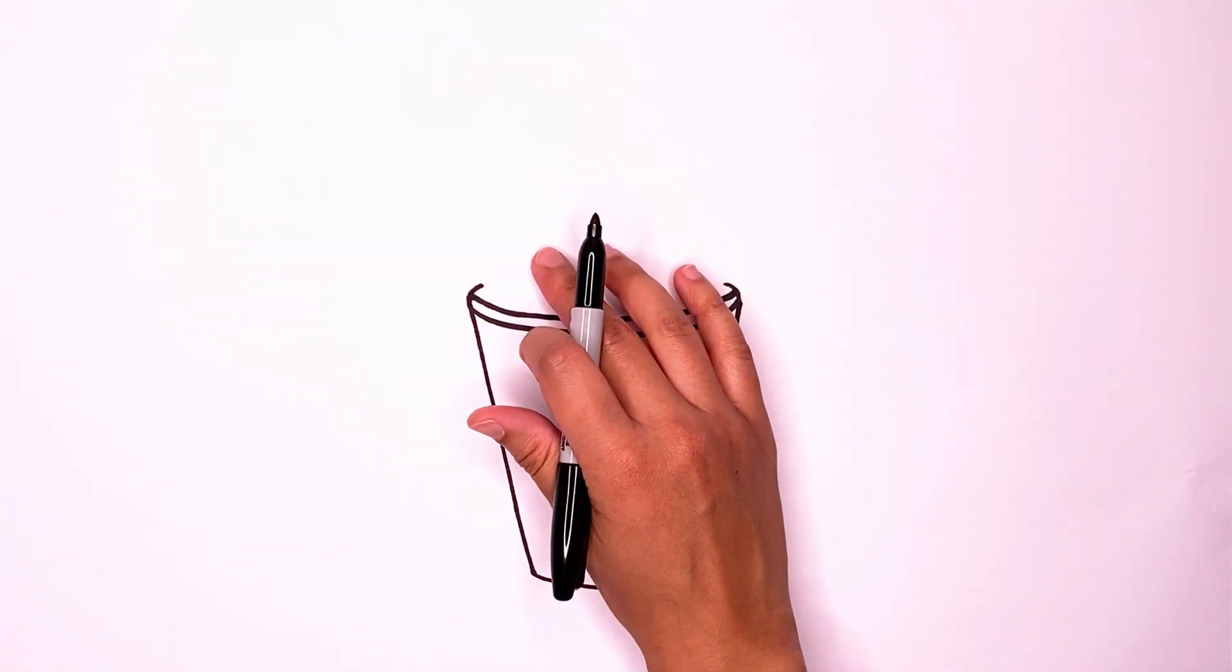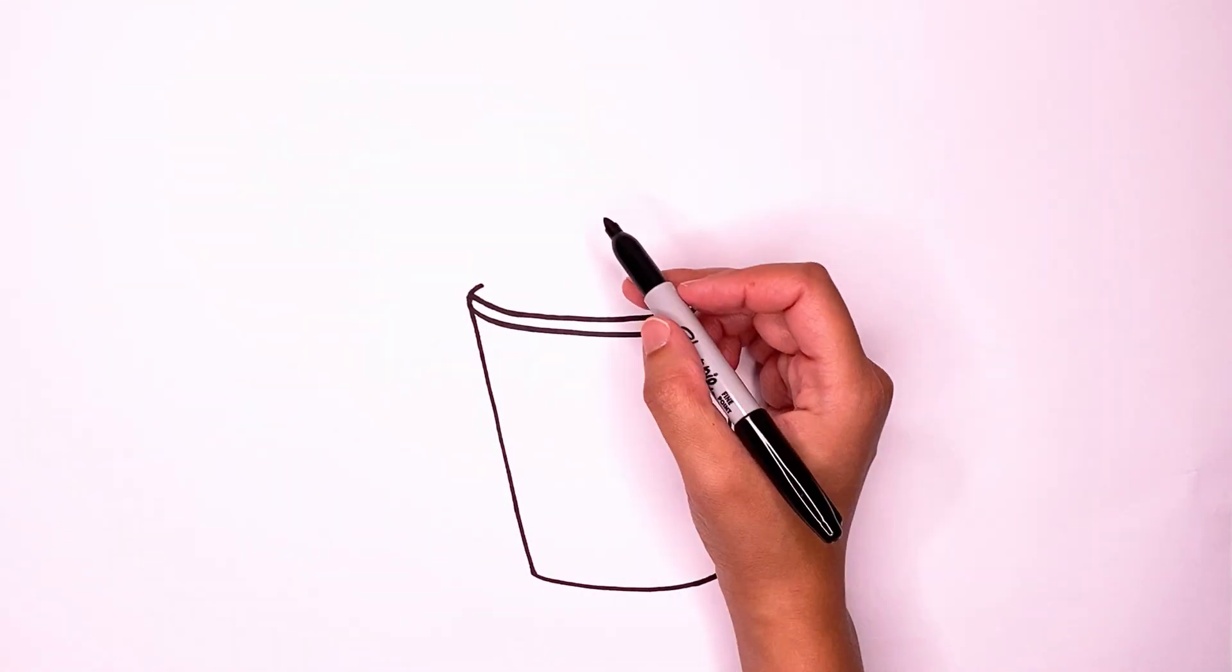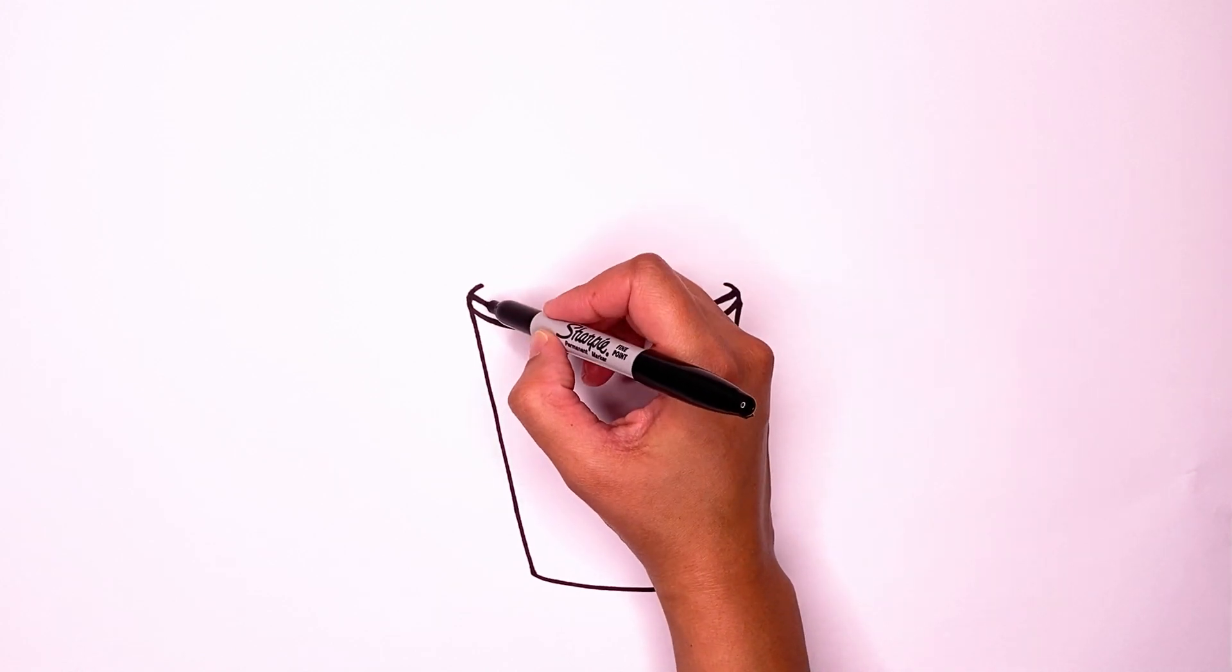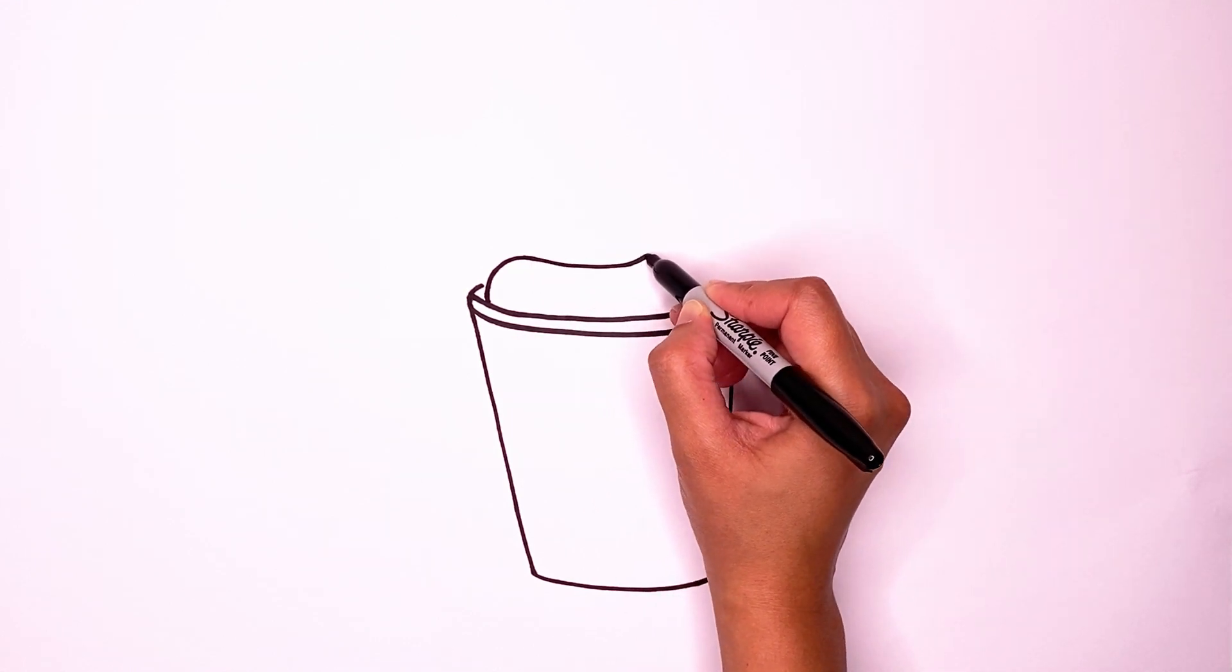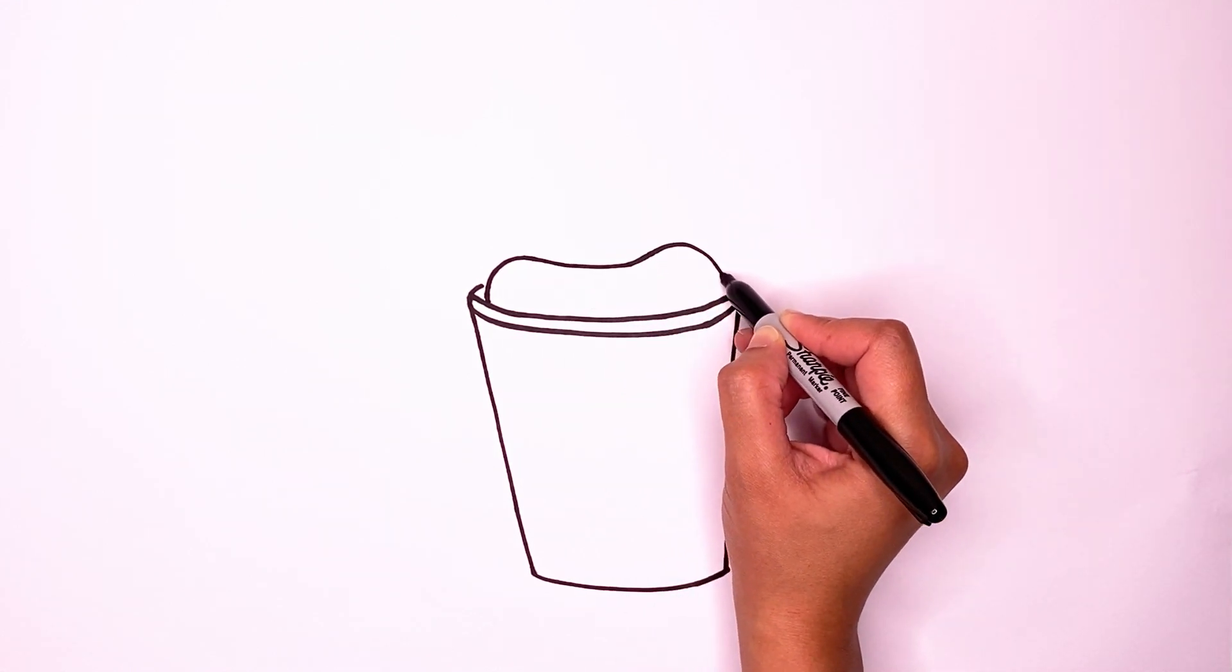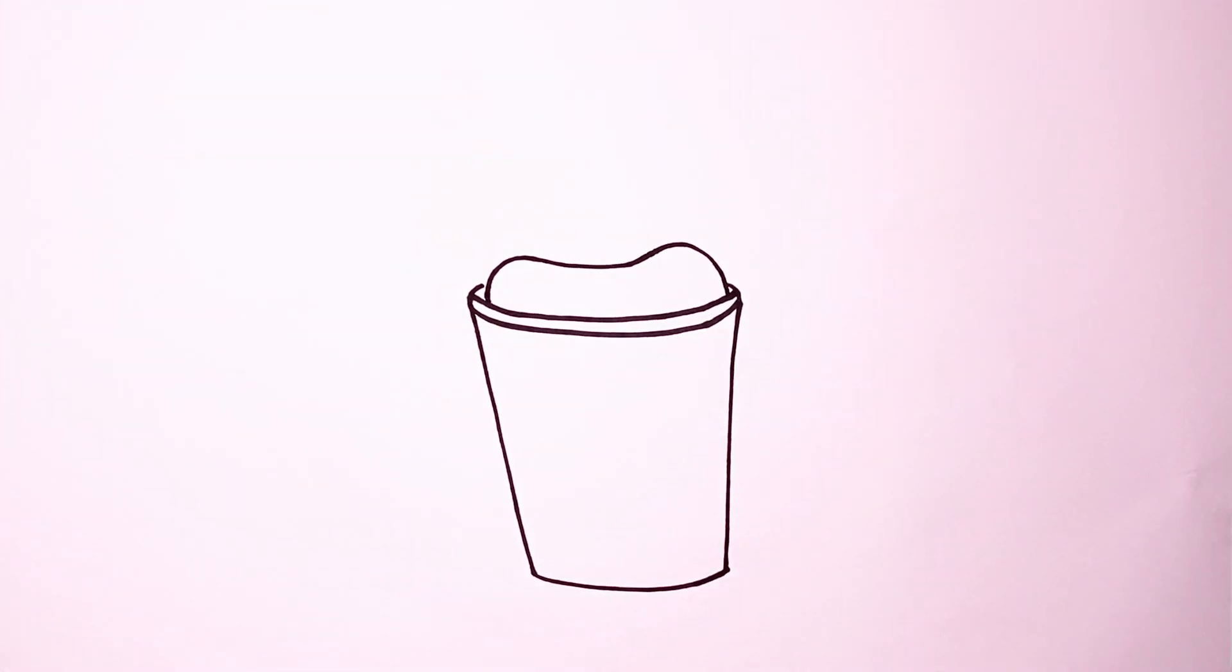Now there's a bunch of whipped cream at the top. That's my favorite part. So let's draw it by starting to go up and in and around and down until you get to the other side.